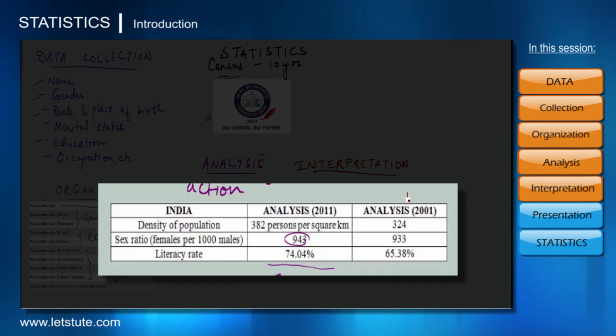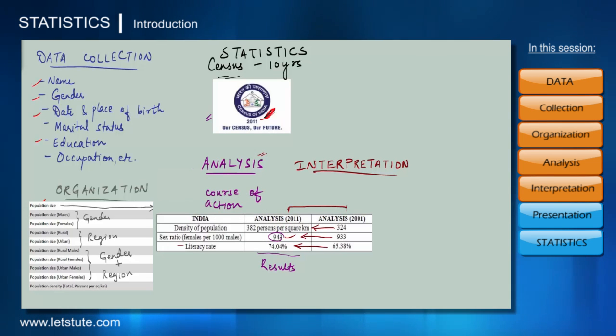While comparing the analysis data of 2001 and 2011, we can say the density of population has indeed increased, which means space for individuals is gradually decreasing. Similarly, the sex ratio has also improved but still it is very low. Also the literacy rate has taken a jump but it only inspires us to do better as far as implementing education is concerned. So these are the kind of interpretations we can make out of the analysis report of data.